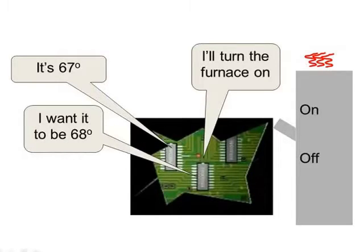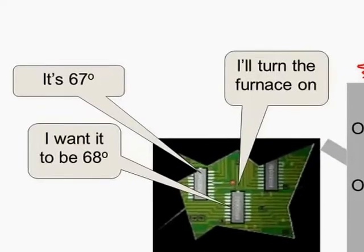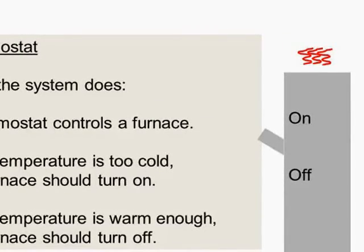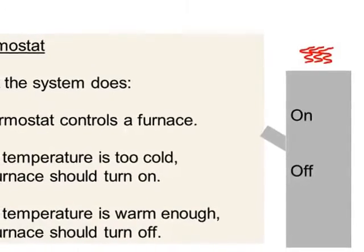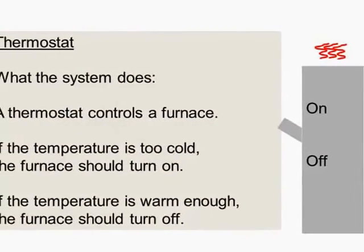The thermostat checks the temperature, compares it to a preset temperature, and decides whether to turn the furnace on or off, and it just continually repeats that procedure. So, what the thermostat system does, it controls a furnace. If it's too cold, the furnace turns on. If it's warm enough, the furnace turns off.